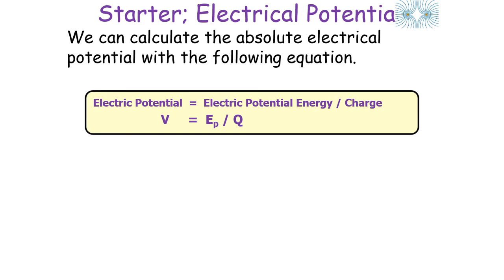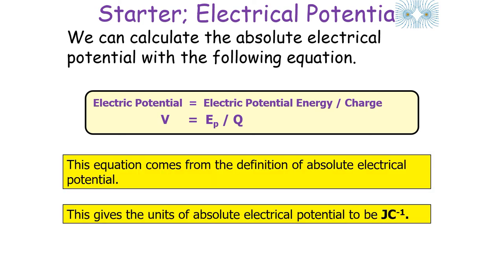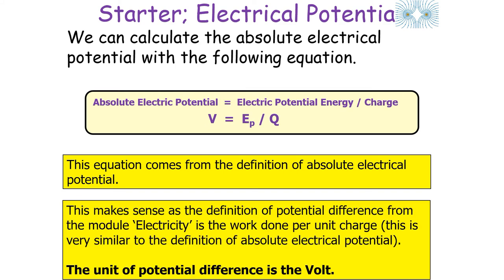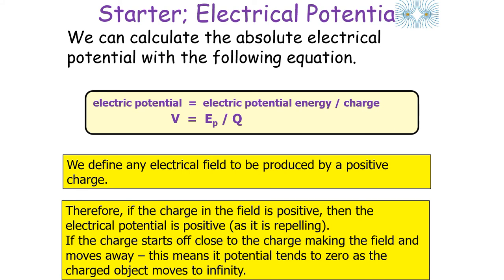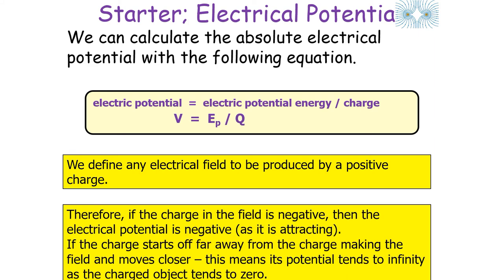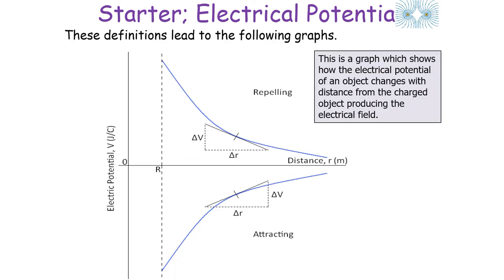We calculate electrical potential with V = electrical potential energy / charge, giving units of joules per coulomb, which is the same as the volt. If an object starts close to a positive charge and moves away, its potential tends to zero as it moves to infinity — the electrical potential is positive. However if the charge producing the field is negative, the potential starts far away and tends to negative infinity as the object moves closer, which produces the characteristic potential graphs.